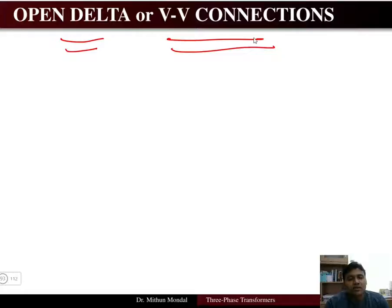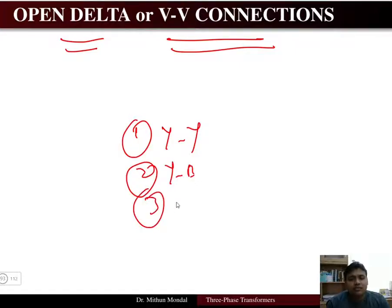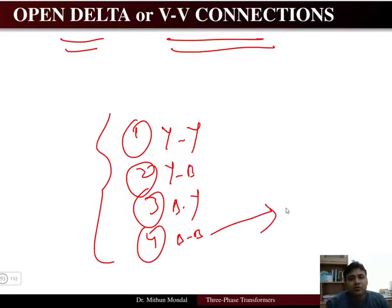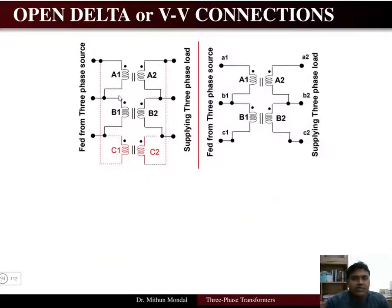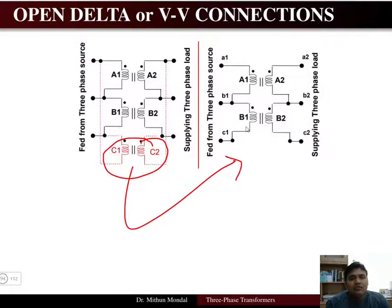This brings us to the open-delta or VV connection. If one of the three phases in a delta-delta bank fails — say transformer T3 on phase C — the system is left with only two phases, A and B. Power continues to flow but at a reduced capacity.